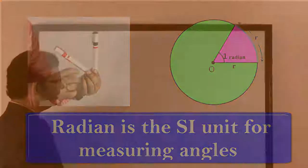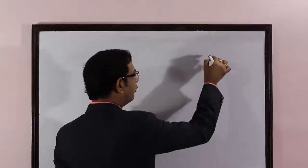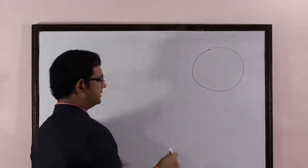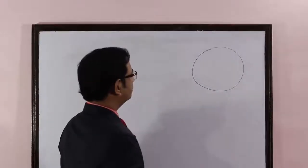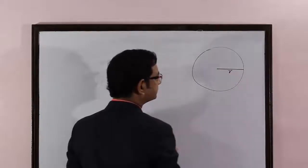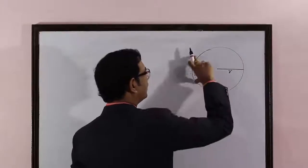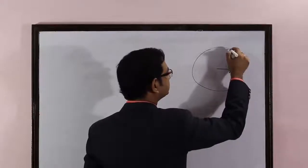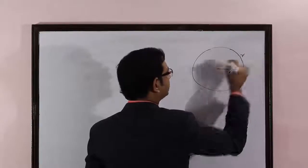Let's define radian. To define radian, draw a circle of any radius. Suppose this circle has radius r. Then, cut an arc of length r — an arc whose length is equal to r units.